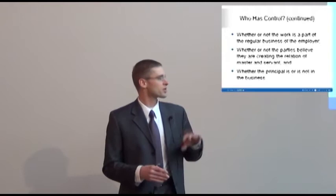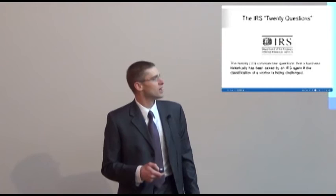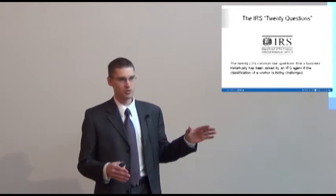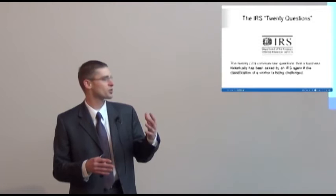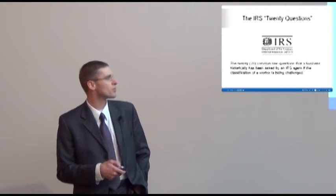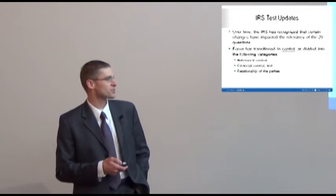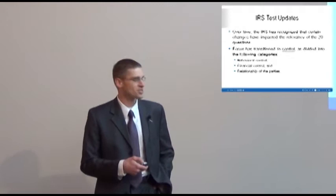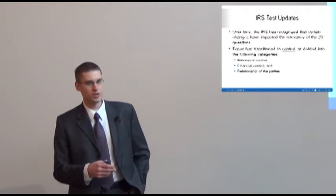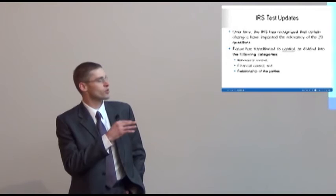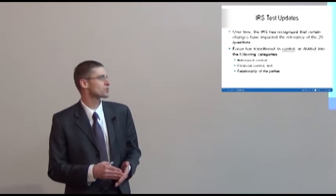Moving past the common law factors — that control element and all those factors weave into all the other tests. The IRS has taken these 20-factor common law questions and made them official. Even though they have these 20 questions in any analysis, it all boils down to control: behavioral control, financial control, and the relationship of the parties. You can't emphasize that enough — the control element is really the nuts and bolts of it. In almost any test, that's what it comes back to.